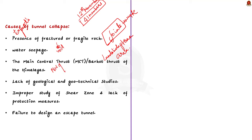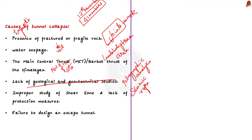Fourth, lack of geological and geotechnical studies — experts have questioned whether studies like petrographic analysis and seismic refraction wave analysis were conducted before excavation. These tests determine whether rock can bear the load of the overburden when a tunnel is created. Fifth, improper study of the shear zone and lack of protection measures — there was also failure to use protective measures like steel ribs, rock bolts, or shotcrete due to lack of regular monitoring.